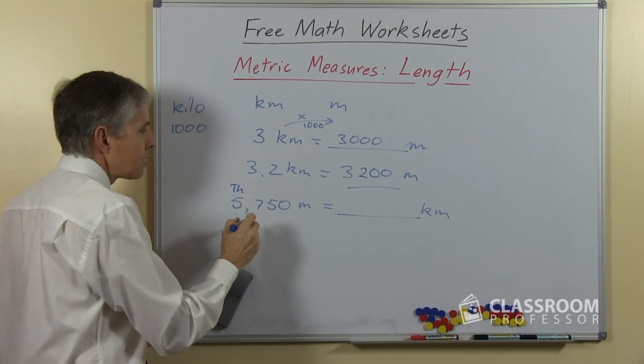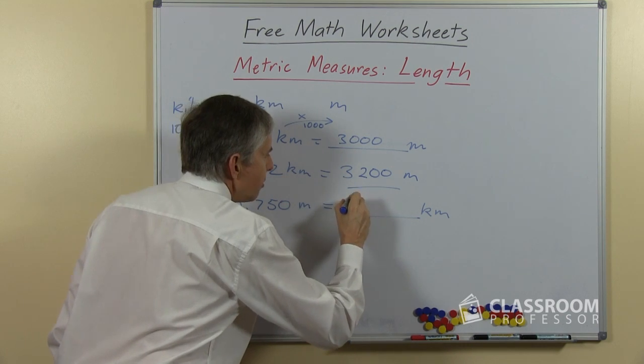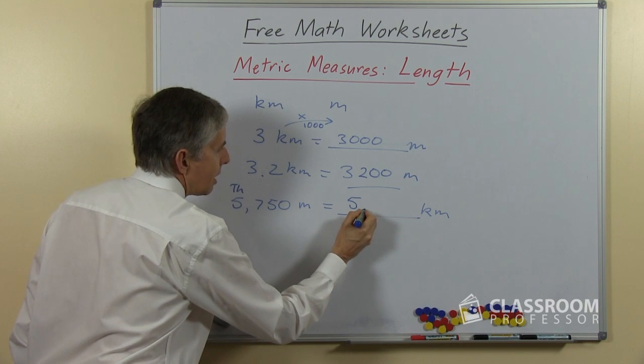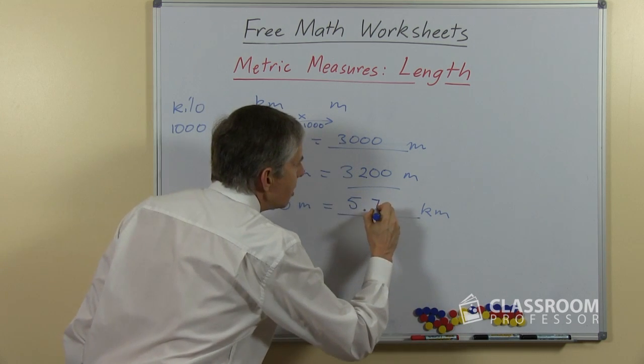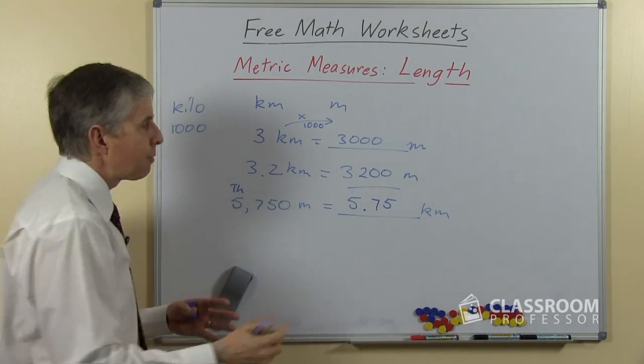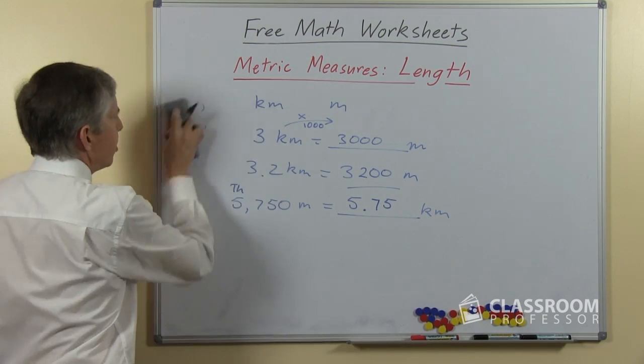So this will be 5 kilometers, won't it? Then we need a decimal point, because that's the last of the kilometers, followed by the 7 and the 5. You could put the 0, or you can leave the 0 off, because it's the other side of the decimal point.